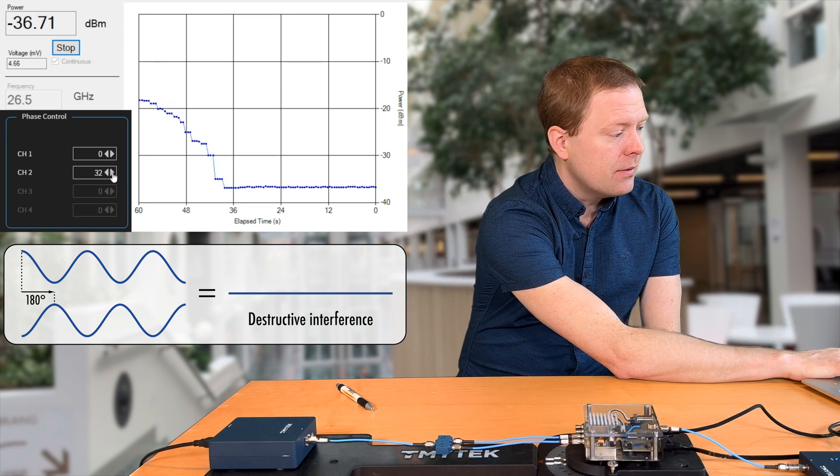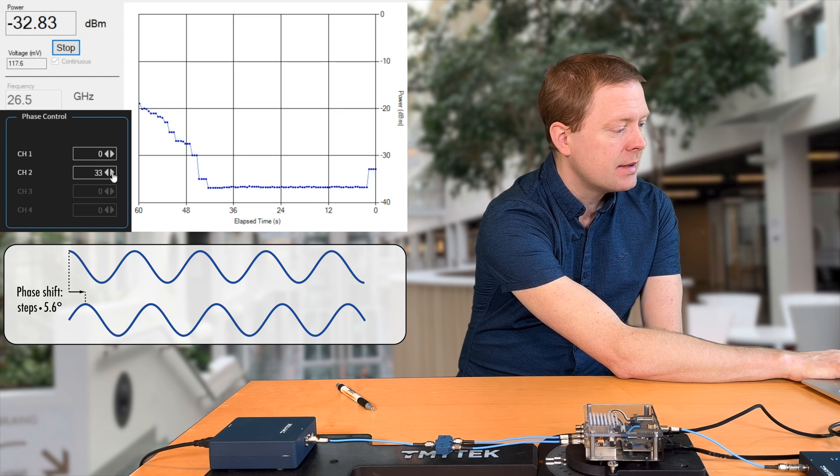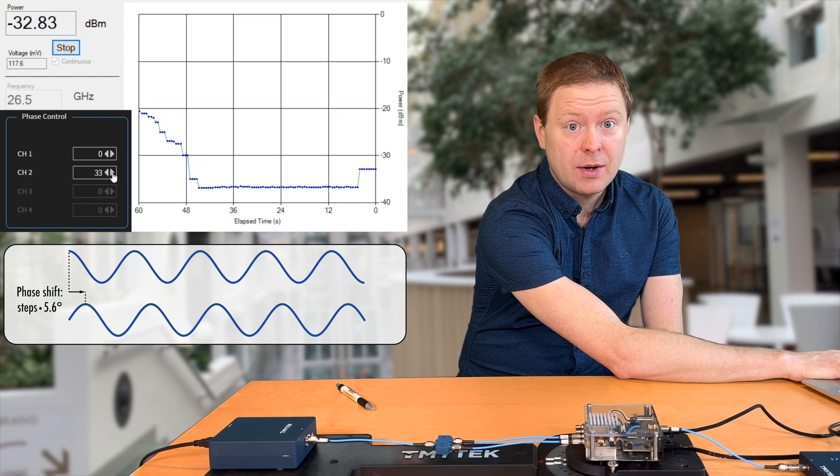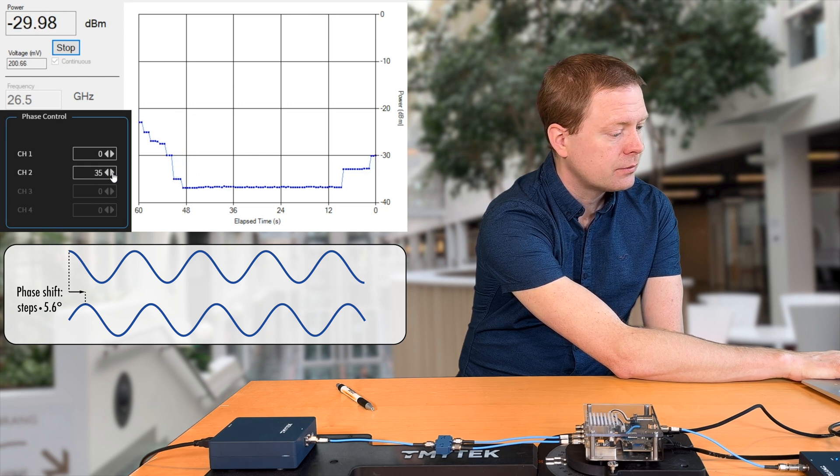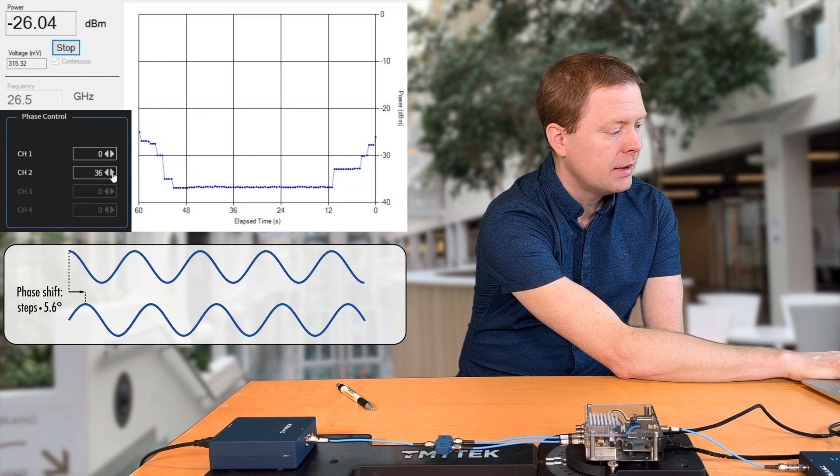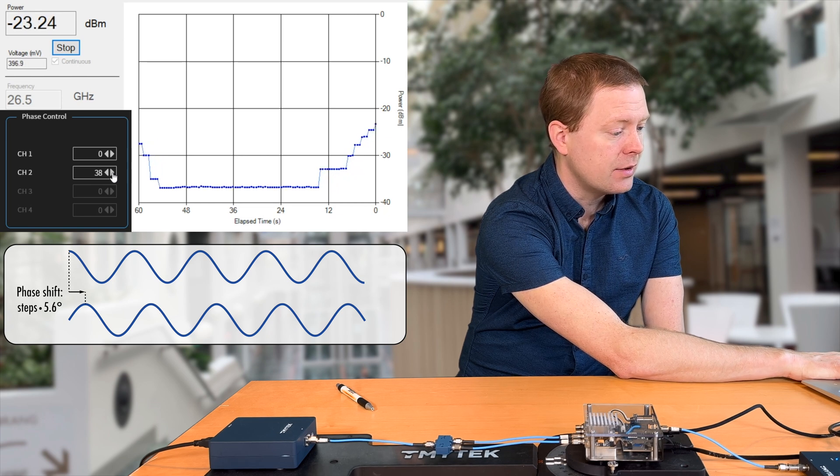If I now continue phase shifting, 33, we see that now they are not canceling out each other as much anymore. They go up a step, 34, 35, 36. It goes rapidly in the beginning when they are canceling out each other.